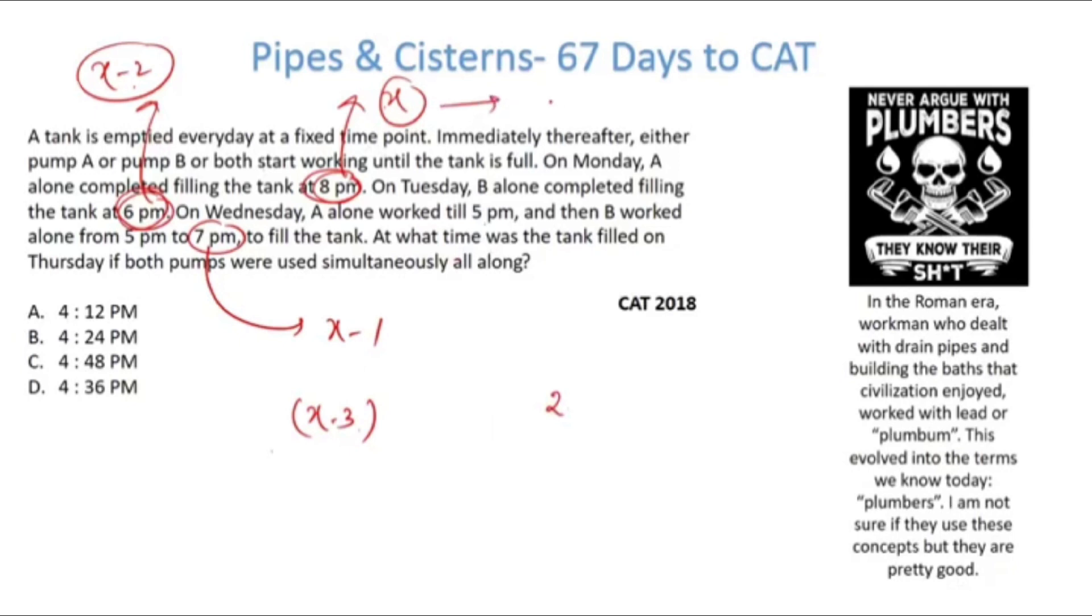For A the unit work or per hour work is 1/x. And for B per hour work is 1/(x minus 2). Just multiply it, and this should be equal to 1. How do we find out x? We'll have to use a quadratic to solve. But what's a better way? What's a faster way to do it? A guided hidden trial.